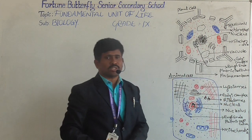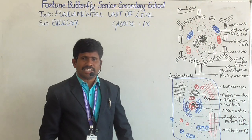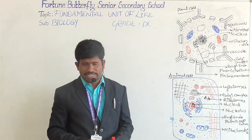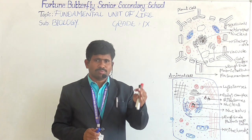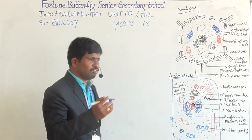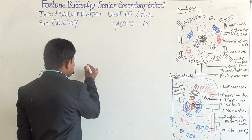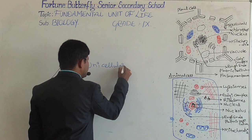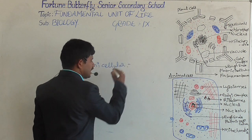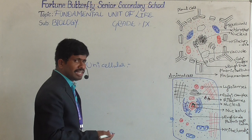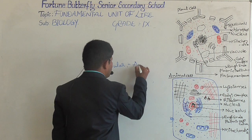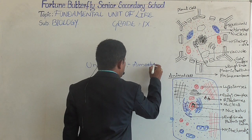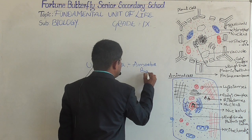The cell is the basic unit of life. The cell is the structural and functional unit of living beings. Some organisms' bodies are made up of only a single cell — those organisms are known as unicellular organisms. Examples of unicellular organisms are amoeba and the bacterium cell.